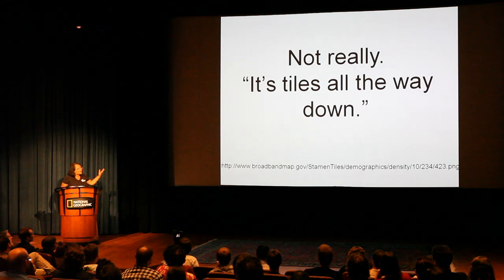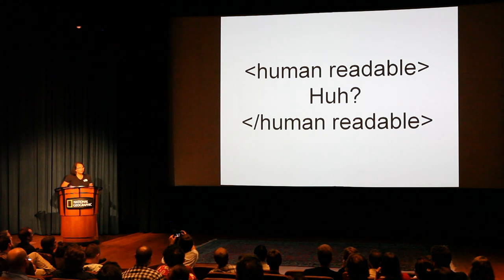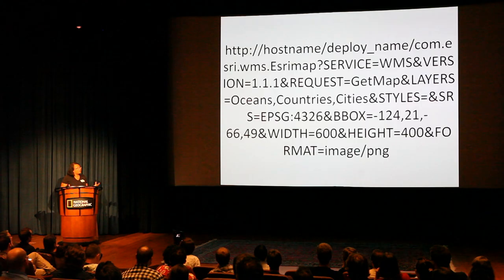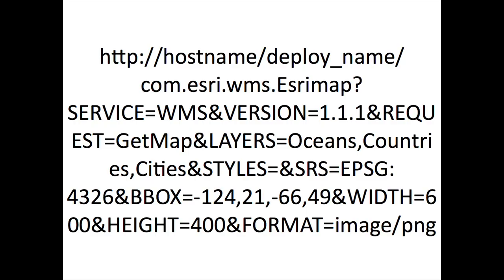Some of the great things people point out to me when I say WMS is that this is really human readable — stuff like GML is human readable, SLD is human readable. Really? Seriously? If you want to read all the stuff in angle brackets... look, this is a request to get a map. I'm not picking on Esri, but I just happened to pull their thing off the web. I want a map of oceans, countries, and cities, and I have to tell them the styles, tell them the projections, tell them the bounding box. But is it really human readable? I don't think so.